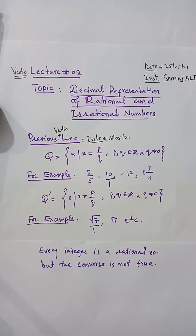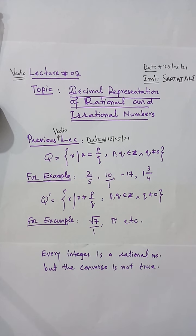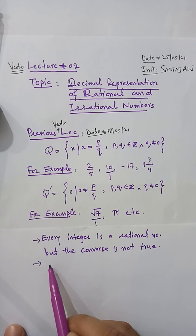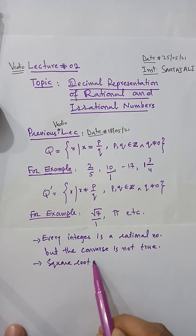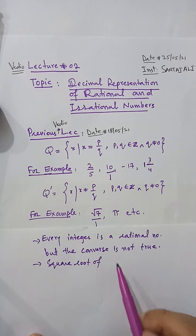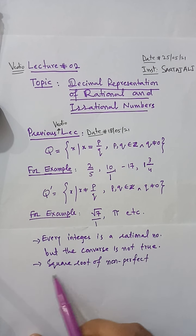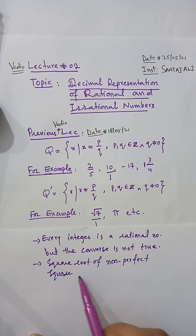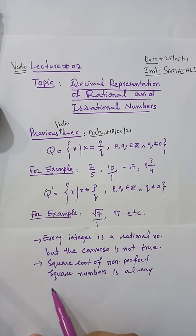We already discussed a point that the square root of a non-perfect square is always irrational. Remember that point from the previous video lecture: the square root of a non-perfect square number is always irrational.